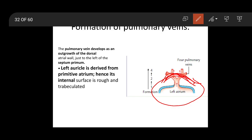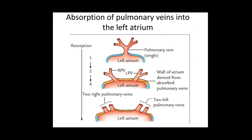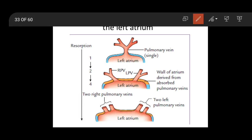So this part finally forms the left atrium with the pulmonary veins. The smooth posterior part — where the pulmonary veins are opening — is formed by absorption of the pulmonary veins. The rough anterior part, which is trabeculated, is formed by the left half of the primitive atrium, as is the auricle. In this diagram you can see the left atrium with the single pulmonary vein, then formation of two, and finally four pulmonary veins getting absorbed into the wall of the atrium.